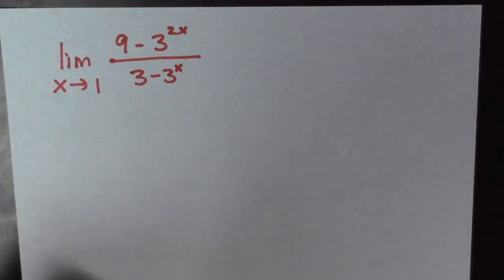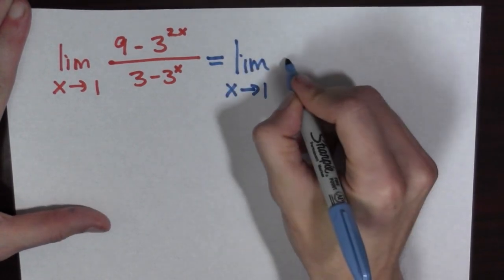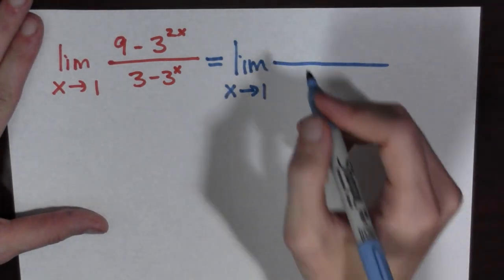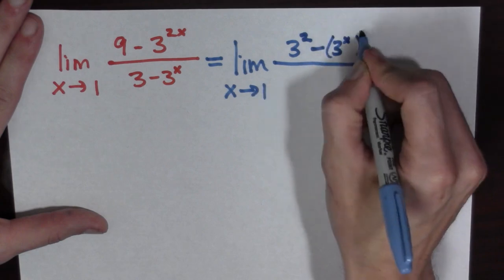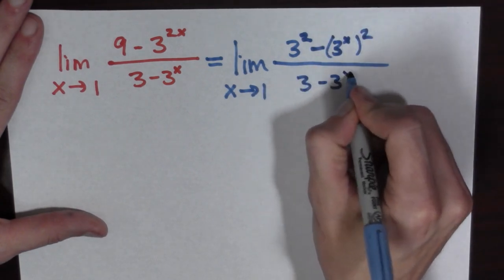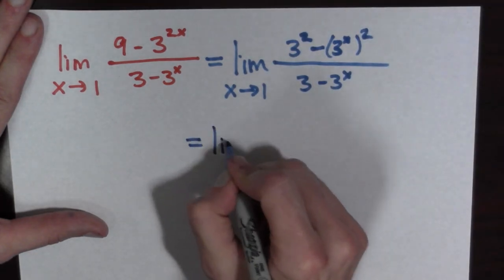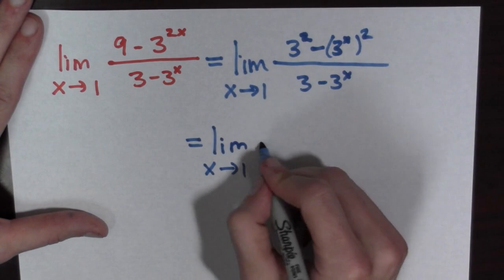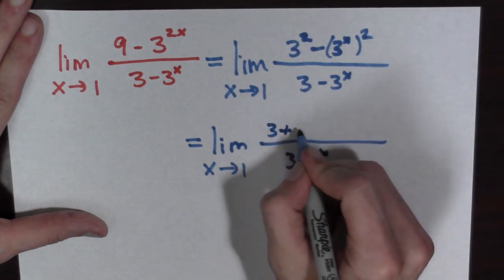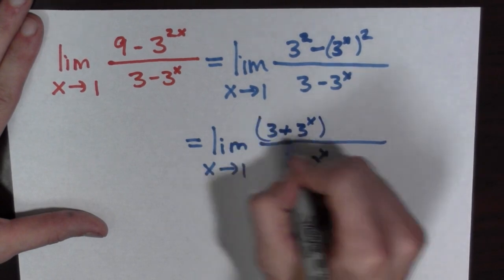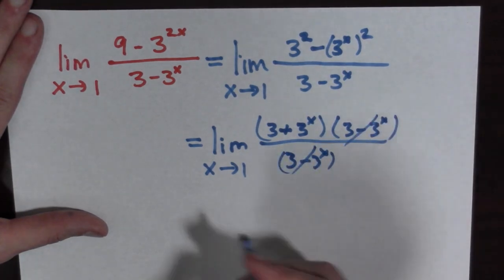What we're going to do is rewrite the numerator. We can write it as 3 squared minus 3 to the x, squared, over 3 minus 3 to the x. This is the difference of two squares, and we know how to factor that. So we factor the numerator as 3 minus 3 to the x, times 3 plus 3 to the x, over 3 minus 3 to the x. Now we can cancel the 3 minus 3 to the x terms because we're taking the limit.